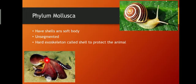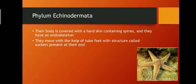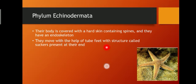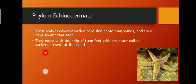Coming to the next phylum — phylum Echinodermata. Echino means spiny and dermata means skin. The body of this organism is covered with a hard skin containing spines, and they have an endoskeleton. They have tube feet with the help of which they walk and catch their prey. At the end of the feet, they have suckers with which they stick to the substratum — any rock or surface. These are the characteristics of phylum Echinodermata.